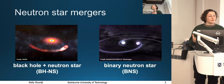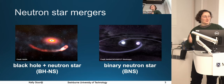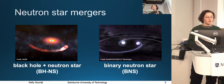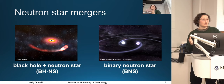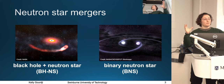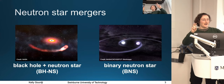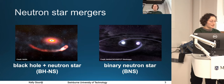When I use the term neutron star mergers, I'm really referring to two different types of systems. I'm referring to systems that contain either a black hole and a neutron star, or a double neutron star system — a binary neutron star system. Over time, these objects will move closer and closer together through gravitational wave radiation until ultimately the point of coalescence, or merger time.